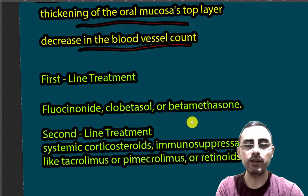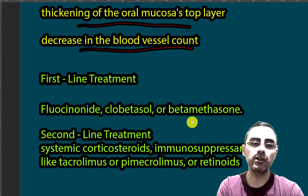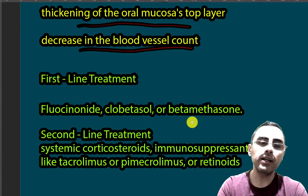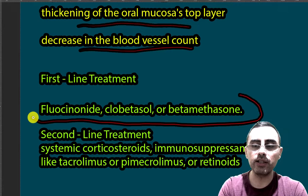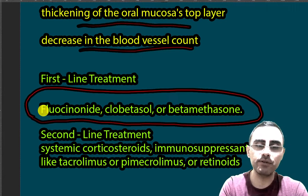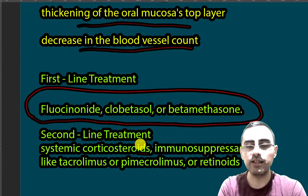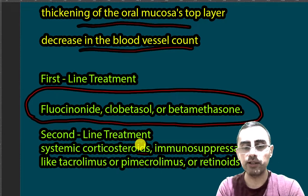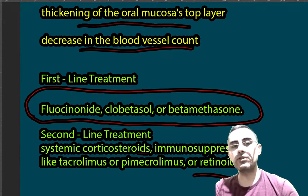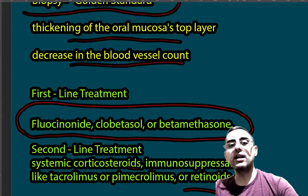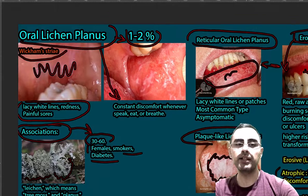Regarding treatment, first-line treatment is topical corticosteroids. If topical corticosteroids are ineffective, systemic corticosteroids are used as a second-line treatment, along with immunosuppressants and sometimes retinoids. That's all I wanted to say about lichen planus.